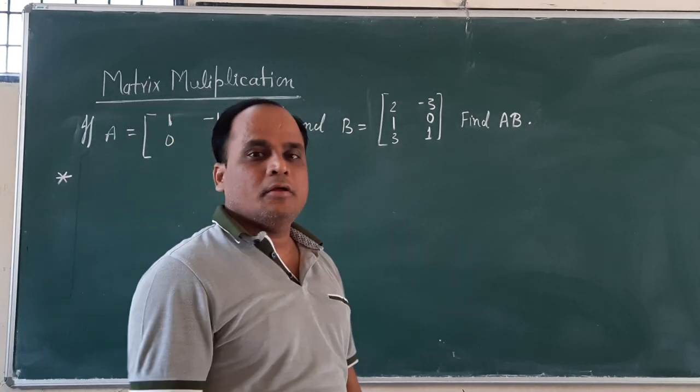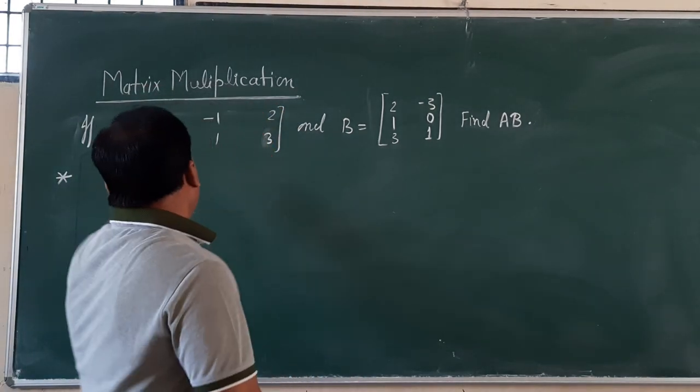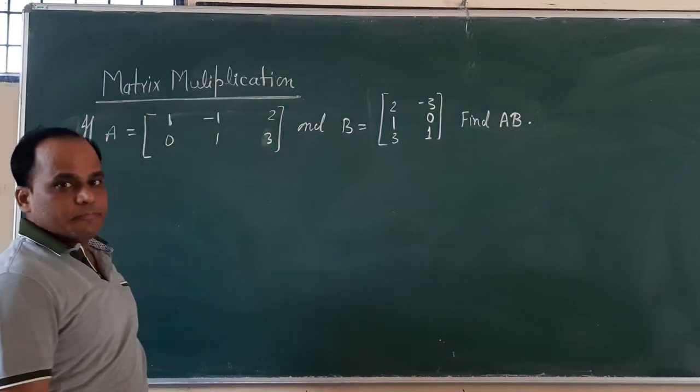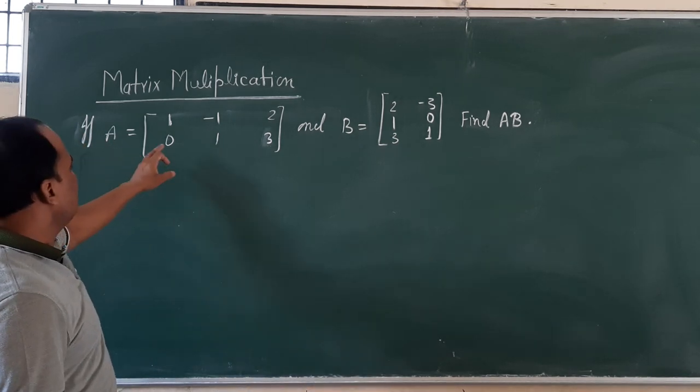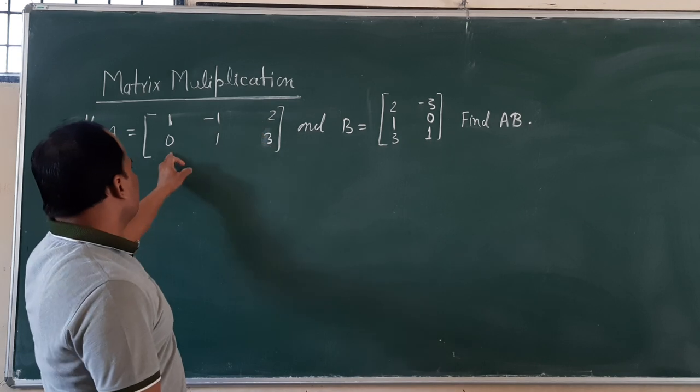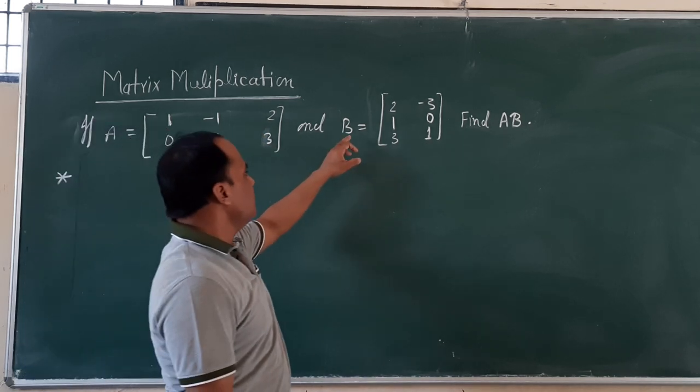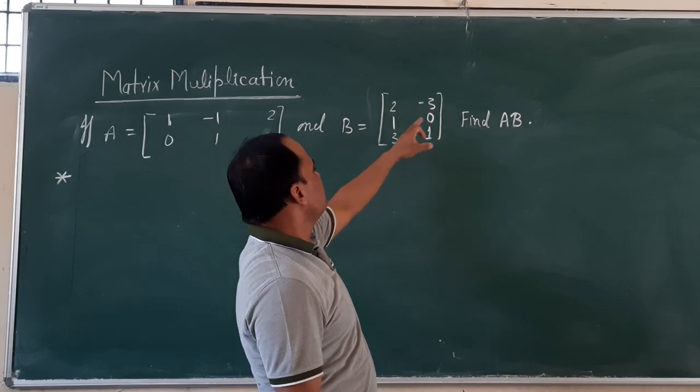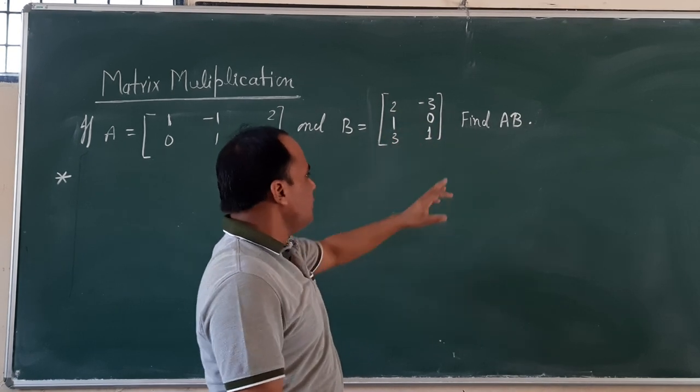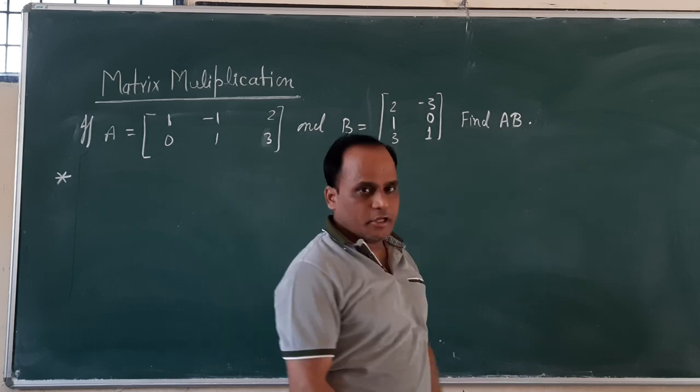Hi everyone, today we are going to show you matrix multiplication. If A equals 1, minus 1, 2, 0, 1, 3 and B is another matrix whose entries are 2, minus 3, 1, 0, 3, 1, then we have to find out AB.